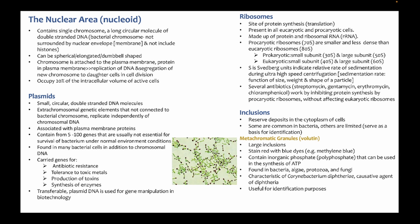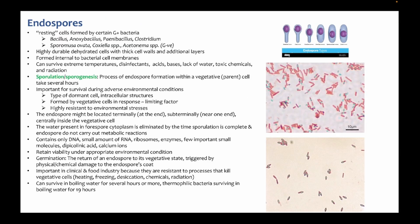Ribosomes: remember the difference between prokaryotic and eukaryotic ribosomes — 70S versus 80S — made up of large and small subunits. There is also the staining of metachromatic granules in Corynebacterium diphtheriae, where you can see the granules clearly.